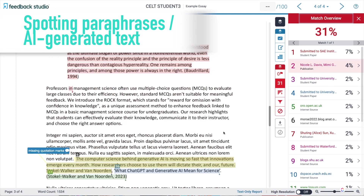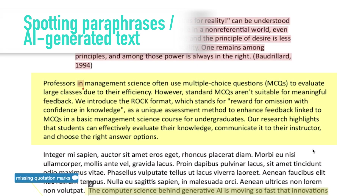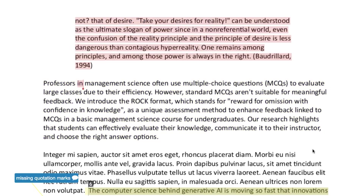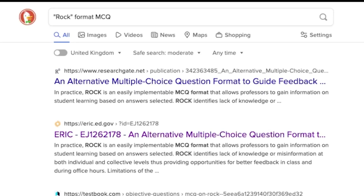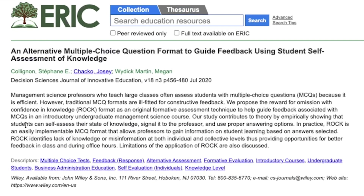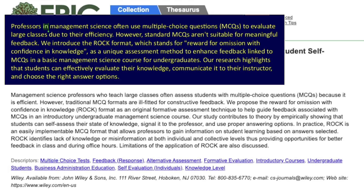There is another oddity in this essay — the style of writing changes dramatically compared to the rest of the text. There are odd word choices, such as 'professors' instead of 'academics' or 'researchers', almost as if a synonym tool has been used. There are also references to 'we introduce' and 'our research' — who is 'we', and what research? Turnitin hasn't picked up anything, but it's suspicious enough to warrant a quick Google search. The passage details an MCQ format called ROC, and searching for it, right at the top appears an abstract for a paper. It's evident that the student has paraphrased this abstract without any attempt to attribute the original authors. This makes it a problem.